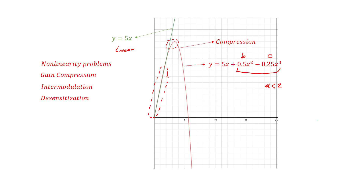That's the problem we face when designing radio frequency systems. Depending on our application, we always want to eliminate nonlinearity in our blocks — whether it's a mixer, power amplifier, or low noise amplifier. We always want to suppress the b and c terms. The nonlinearity problems include gain compression, intermodulation, and desensitization. As mentioned, we have a course that explains these concepts in detail.